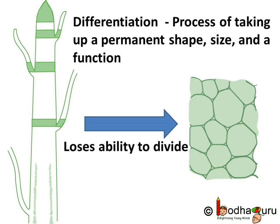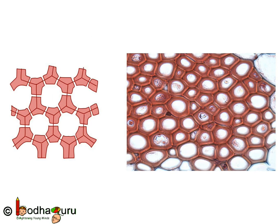This process of taking up a permanent shape, size and a function is called differentiation. Many of the cells are not alive anymore, yet they keep on functioning. Let us look into the different types of permanent tissues.